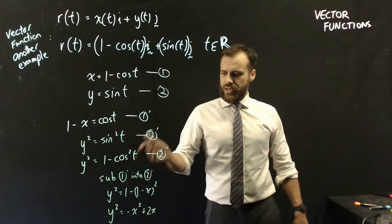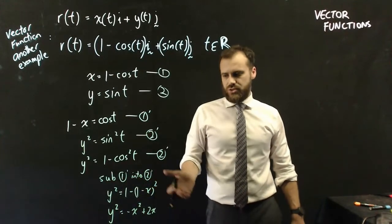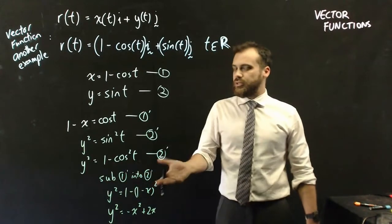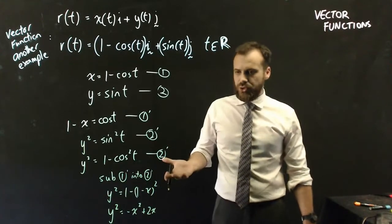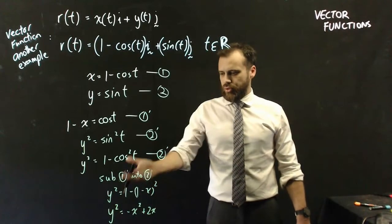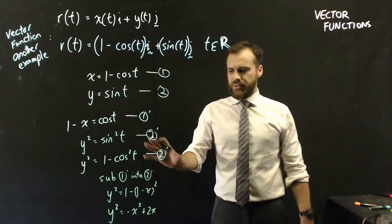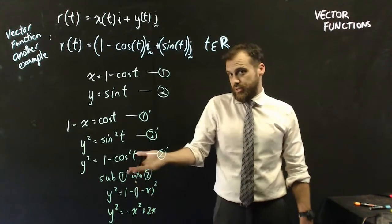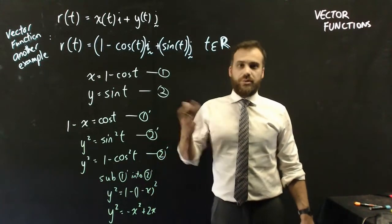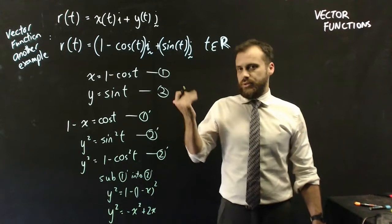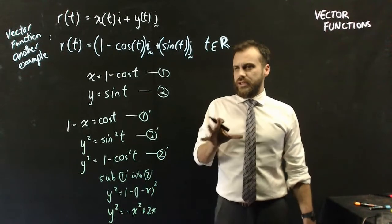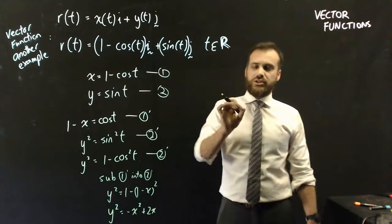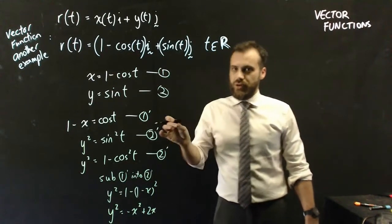Expanding the brackets and tidying up, we arrive at the Cartesian equation y squared equals negative x squared plus 2x. I'm not immediately sure what that shape looks like — possibly an ellipse or circle — but I can type it into a graphing calculator to find out.